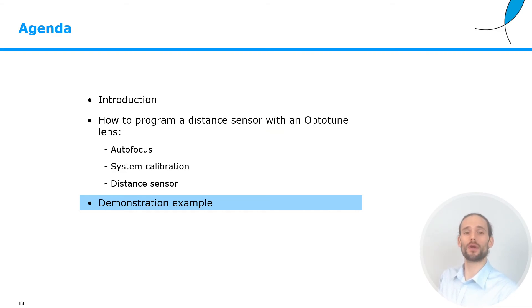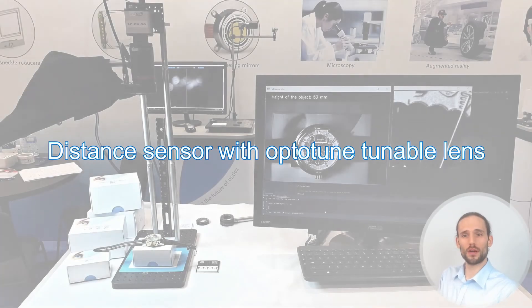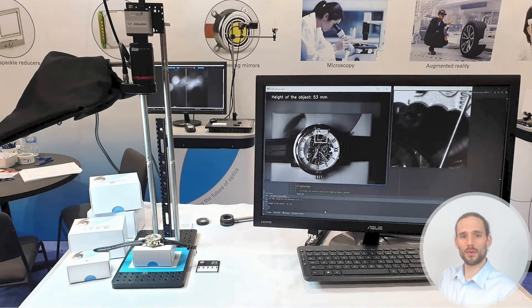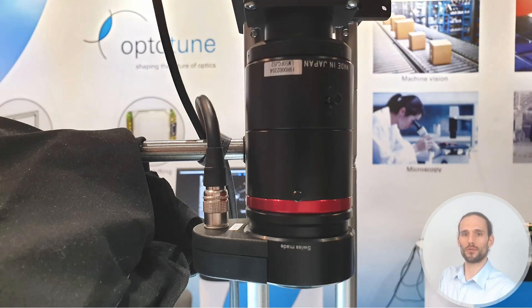We are finally ready to look at the demonstration video of such a sensor in action. Here you see the whole system. On the left, we have basically the machine vision system with the camera and the lens setup. On the right, we have the computer. Here we have a detail of the fixed focal length lens and the Optitune lens.